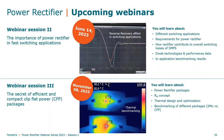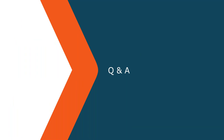As a teaser for upcoming webinars: the second webinar will take place on the 14th of June, where we will focus on the reverse recovery effect and show how rectifiers contribute to switching losses in switched-mode power supplies. The third session will be in November, focusing on power rectifier packages — we will explain the concept of thermal resistance (Rth) and benchmark different packages such as SMA/SMB/SMC packages against our CFP packages. With that, I would like to open the Q&A session. Please feel free to ask your questions.